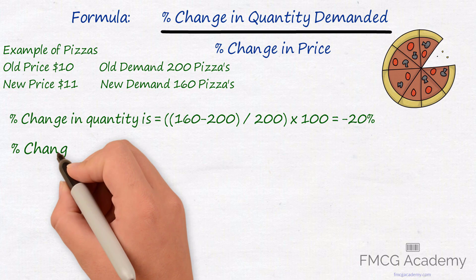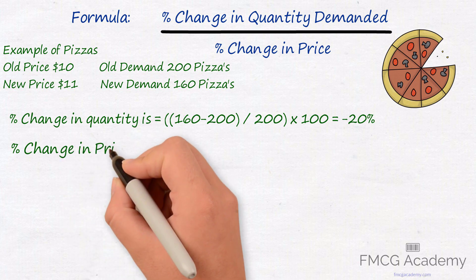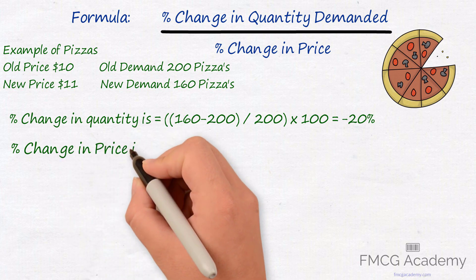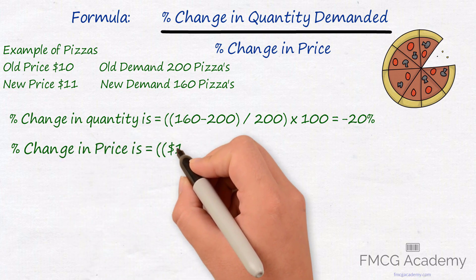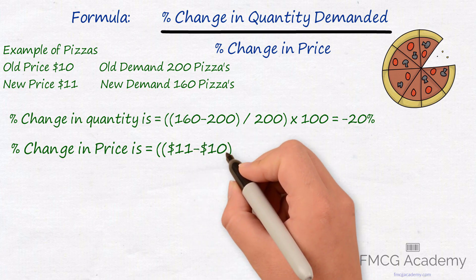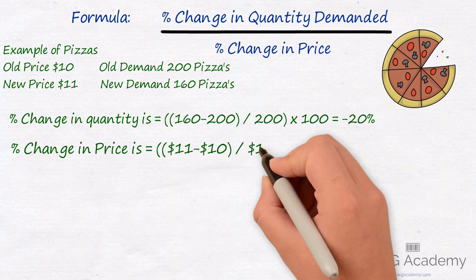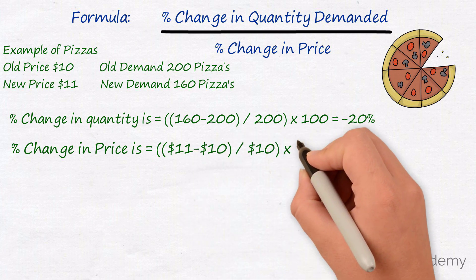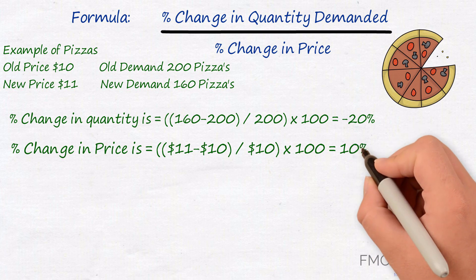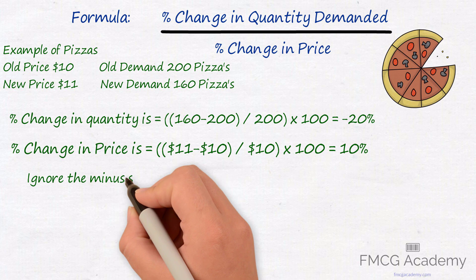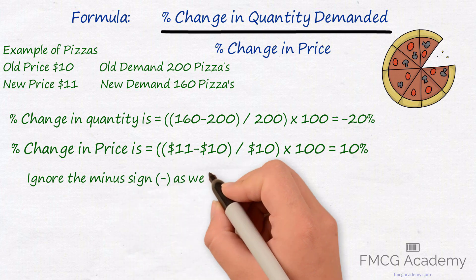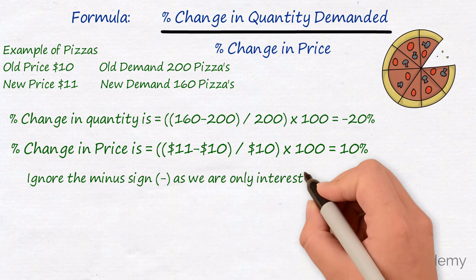To calculate percentage change in price, we take the new price of $11 minus old price of $10 and divide by the old price. We multiply by 100 to get a percentage and we arrive at 10%. We ignore the minus sign as we are only interested in the percentage of change.